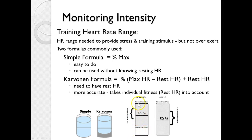With the Karvonen formula, you take the max, subtract out the resting, and calculate 50% — or whatever percent you want to use — of that, which is a percent of the heart rate reserve. So 50% using the Karvonen formula does not equal 50% using the simple formula. The Karvonen is more accurate; the simple is obviously easier.